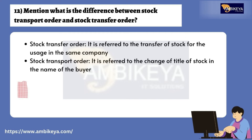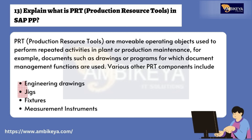Question number twelve: mention what is the difference between stock transport order and stock transfer order. A stock transfer order refers to the change of title of stock in the name of the buyer. Question number thirteen: explain what is PRT (Production Resource Tools) in SAP PP. PRT production resource tools are movable operating objects used to perform repeated activities in plant or production maintenance — for example, documents such as drawings or programs for which document management functions are used. Various other PRT components include engineering drawings, jigs, fixtures, and measurement instruments.